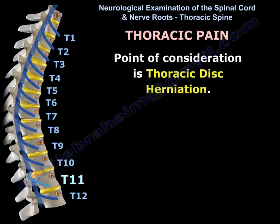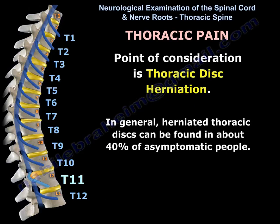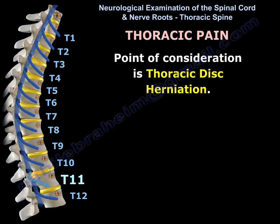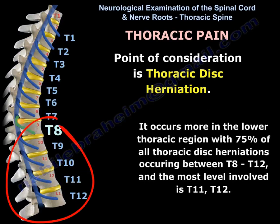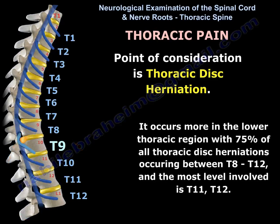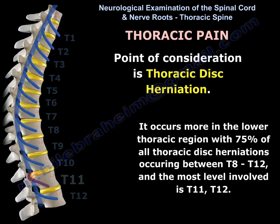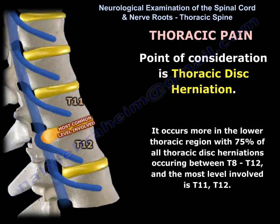A key consideration is thoracic disc herniation. In general, herniated thoracic discs can be found in about 40% of asymptomatic people. It usually occurs during the fifth decade of life, more commonly in the lower thoracic region, with 75% of all thoracic disc herniations occurring between T8 and T12. The most common level involved is T11–T12.